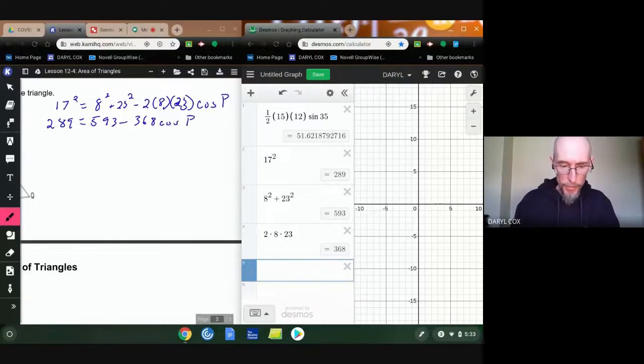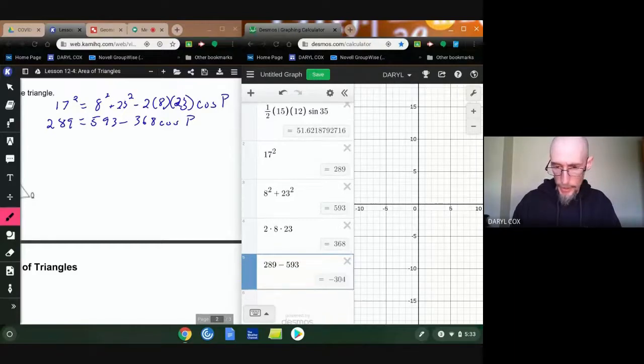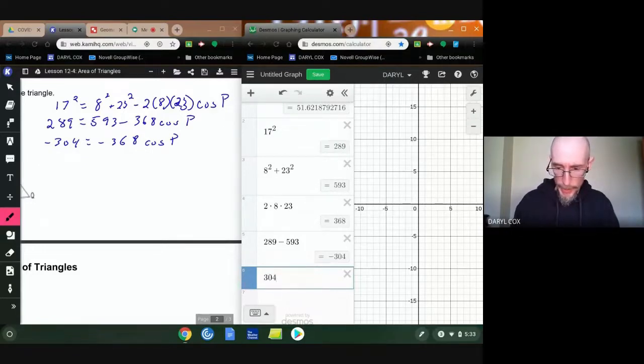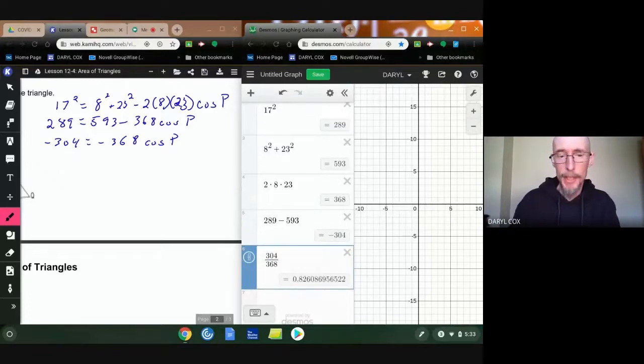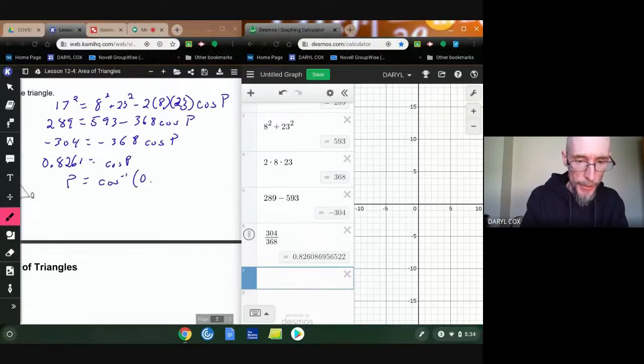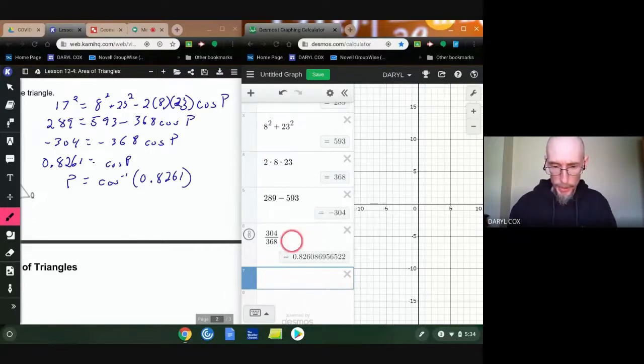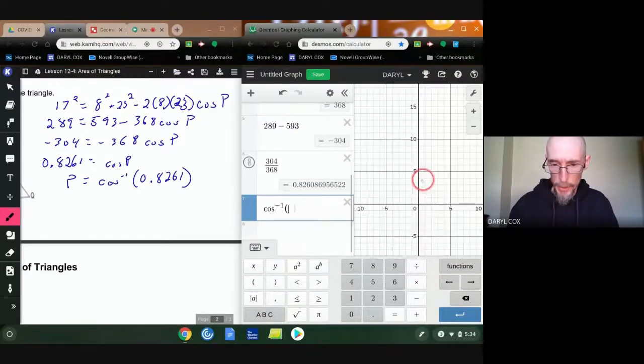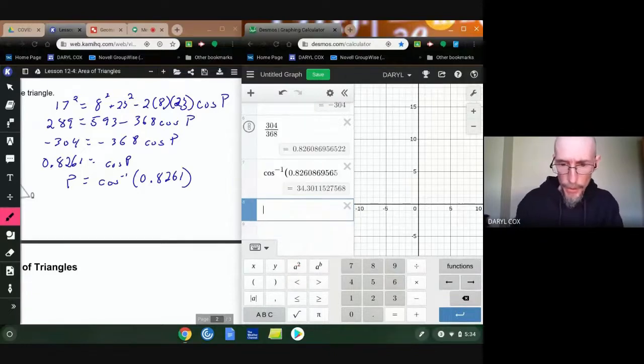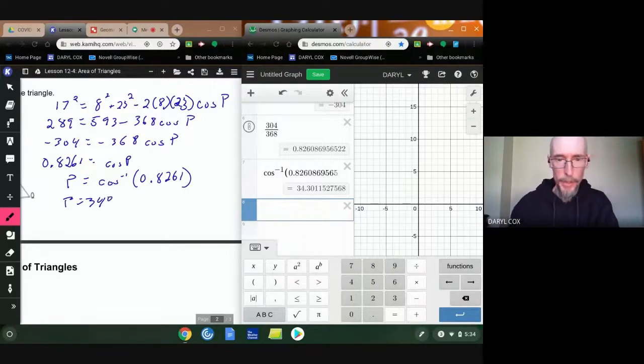Okay. So hopefully you finished this off properly. 289 minus 593 gives me negative 304. Finishing up my work real quick. I need to now divide that. So divide by 368. Hey, notice I didn't type the negatives in because I know that a negative over a negative is a positive. So I kind of just made my life a little easier. And now I need to... So P will be cosine inverse of 0.8261. So I need my cosine inverse. Cosine inverse. I'm going to copy this. And I get P to be about 34 degrees. There we go. Not too bad.